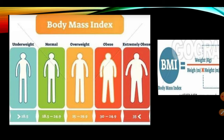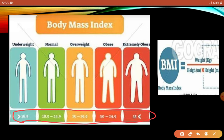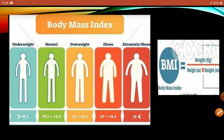Now let's discuss Body Mass Index, or BMI. BMI tells you the nutritional status of your body — whether you are underweight, normal, overweight, obese, or extremely obese. The formula is simple: BMI = weight (in kg) ÷ height² (in meters). So record your weight in kilograms, square your height in meters, and divide weight by height squared. The resulting value tells you which category you fall into and how much attention you need to give to your health.